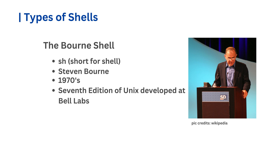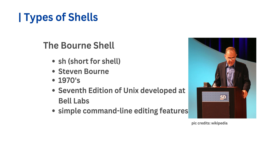The Bourne shell has simple command line editing features. You can type characters, delete them one at a time using the backspace key, and press Enter to run the command. If you make a mistake, pressing Ctrl+C will cancel the entire command. Despite its simplicity, the Bourne shell supports variables and scripting, making it useful for automating tasks, especially in system administration.